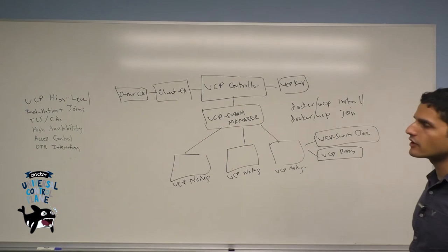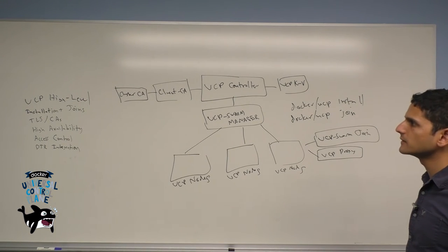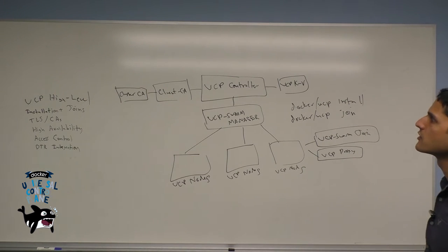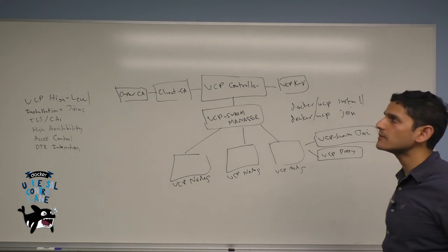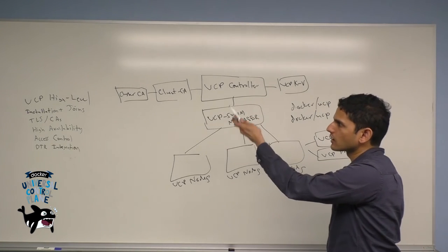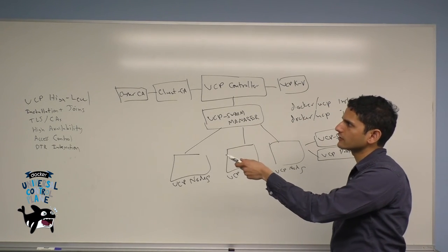In order to certify the transport layer security, we have a pair of certificate authorities which exist on the primary UCP controller. As mentioned before, the client CA and the cluster CA.